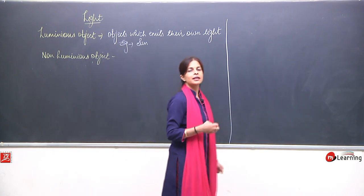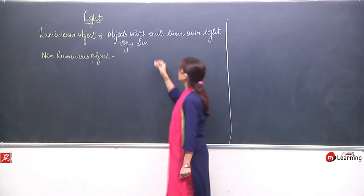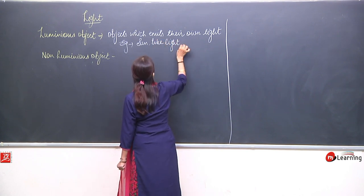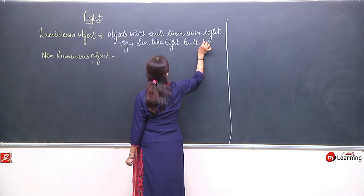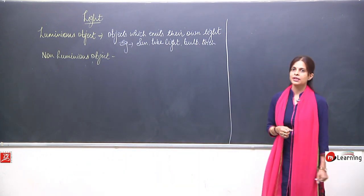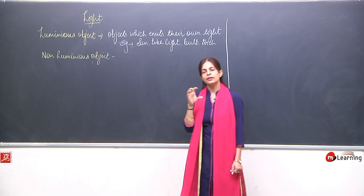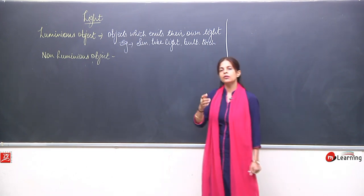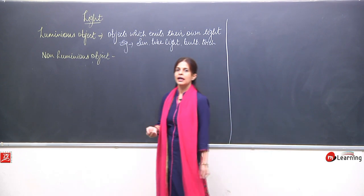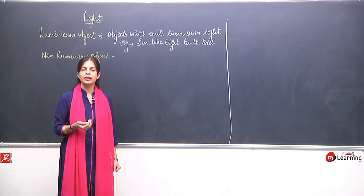When we talk about the sun or any artificial luminous object — maybe a tube light, bulb, or torch — what actually happens is that when these objects emit light, the rays of light get reflected back from the surface of objects and come back into our eyes, and that is the reason we are able to see things.